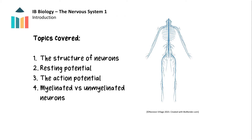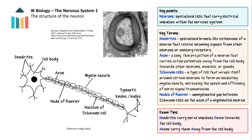This is the first of two key concept videos on the nervous system. The nervous system, along with the endocrine system, is essential for the overall control of functions such as metabolism, homeostasis and reproduction. In the video, we will look at the structure of neurons, the transmission of nerve impulses and the difference between myelinated and unmyelinated neurons. The nervous system is composed of neurons, which form neural pathways to every part of the body. There are three main types of neurons: sensory, relay and motor neurons.